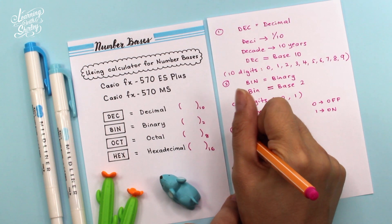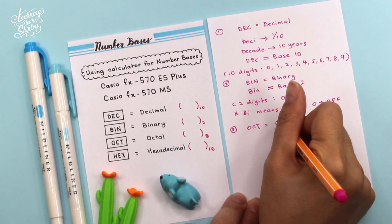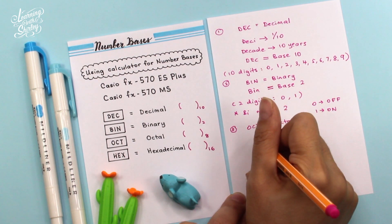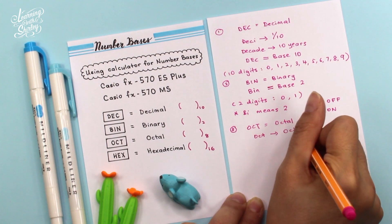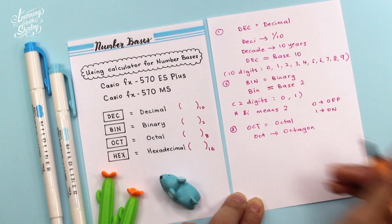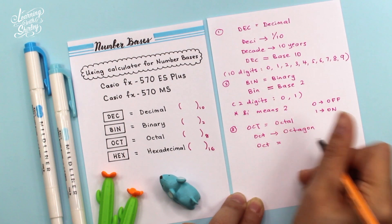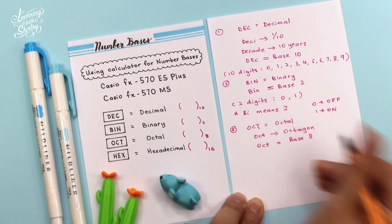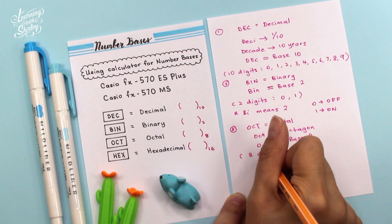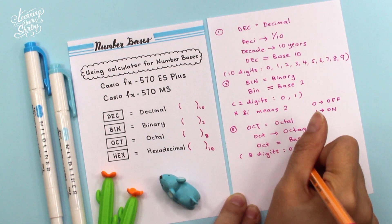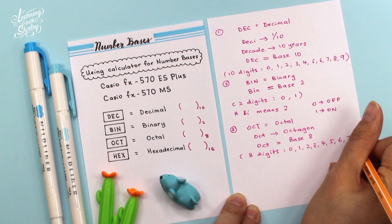Button number 3 is OCT, which stands for octal. We know that 'octagon' has 8 sides, so therefore OCT means base 8. And base 8 has 8 digits. The 8 digits are 0, 1, 2, 3, 4, 5, 6, and 7.